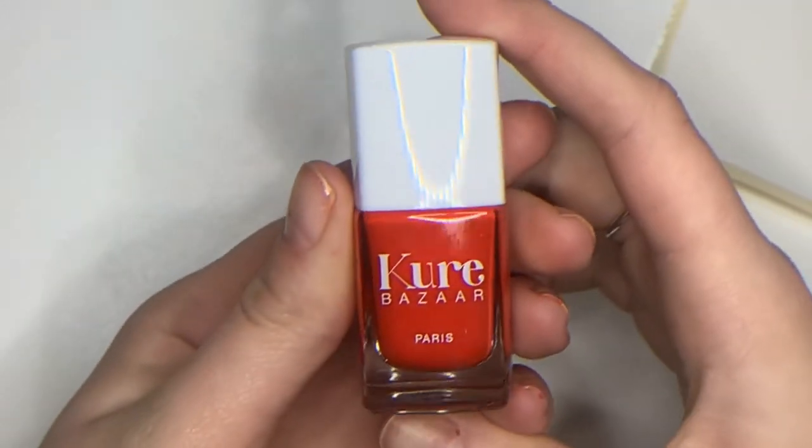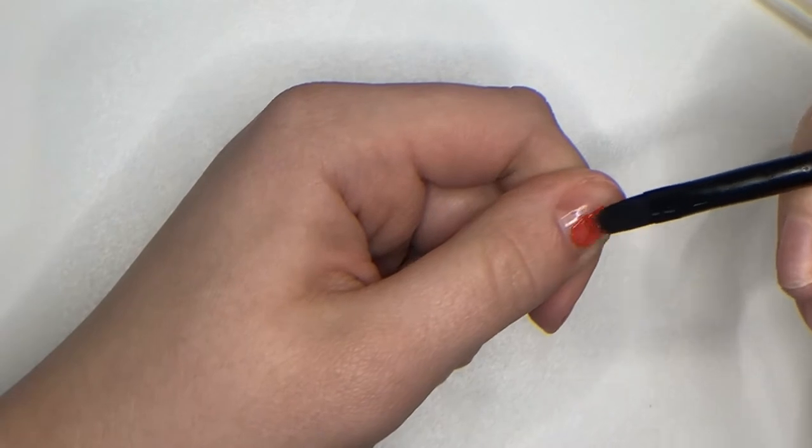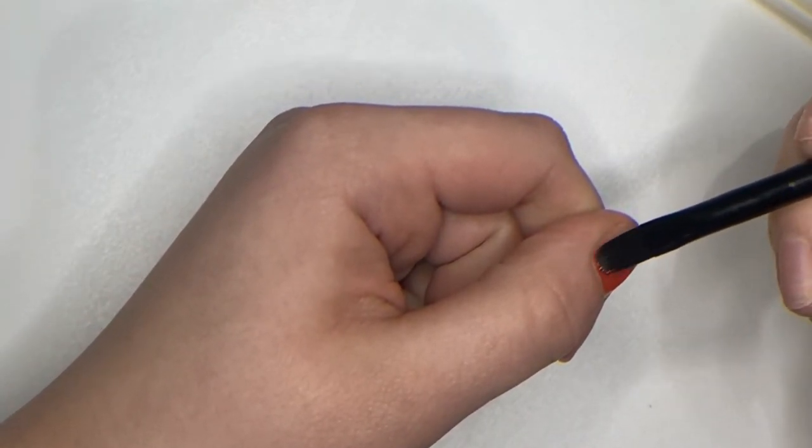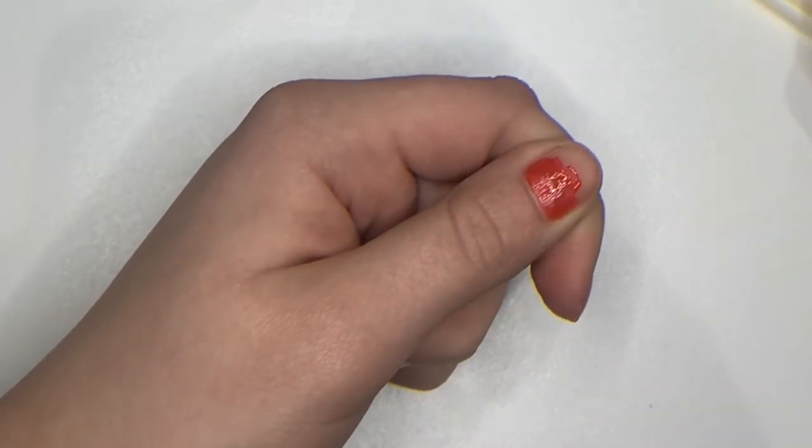I am then going to be using the Cure Bazaar Java Nail Shade which is a new nail shade for Spring 2021. Java is a beautiful vibrant orangey red color perfect for this time of year.